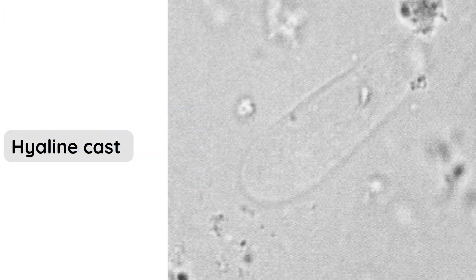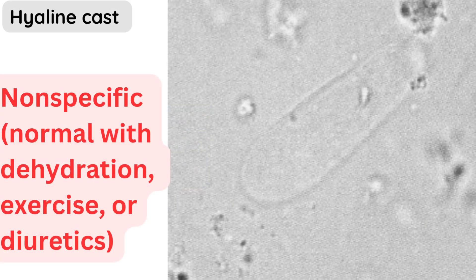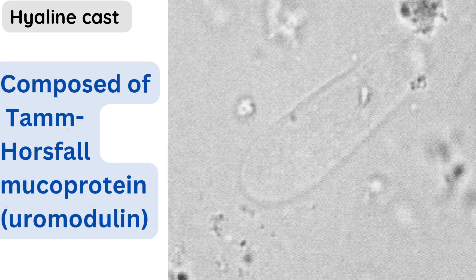Sixth: hyaline casts. These are considered nonspecific and can be observed in various conditions. They are commonly found in situations such as dehydration, intense exercise, or diuretic use. Hyaline casts are composed of Tamm-Horsfall mucoprotein, also known as uromodulin, secreted by renal tubular cells.